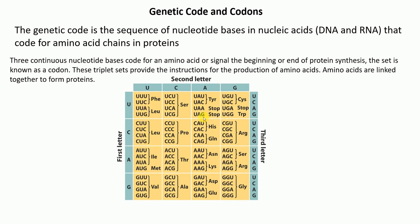Codons are three continuous nucleotide bases. Looking at the codon table, codons like UUU and UUC code for phenylalanine. The table is organized by first, second, and third nucleotide positions. For example, CUU, CUC, CUA, and CUG all code for leucine. However, UAA is a stop codon — it doesn't code for any amino acid.